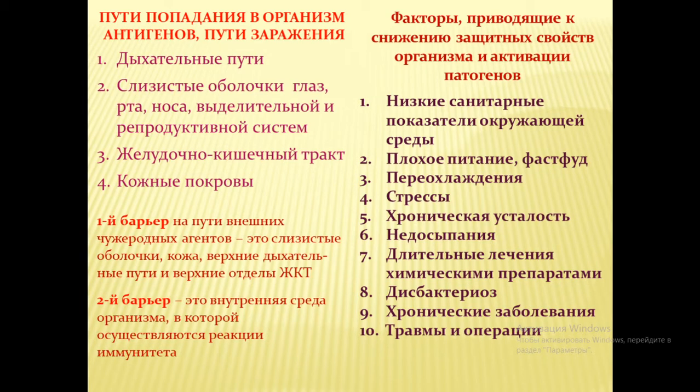Первый барьер на пути чужеродных агентов — слизистые оболочки носа, рта, глаз, кожа, верхние дыхательные пути и верхние отделы желудочно-кишечного тракта. Второй барьер — внутренняя среда организма, то есть вся наша иммунная система: органы, ткани и клетки иммунной системы.